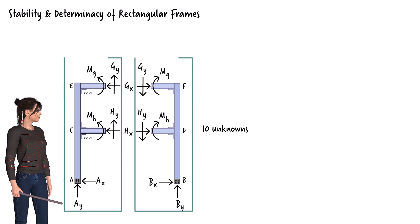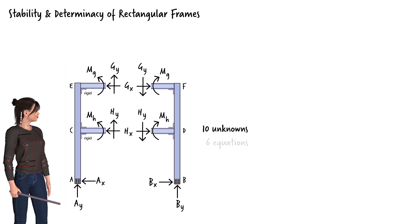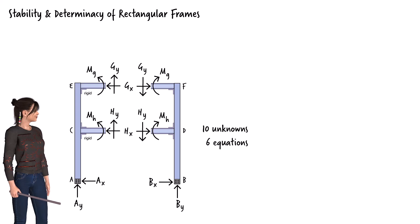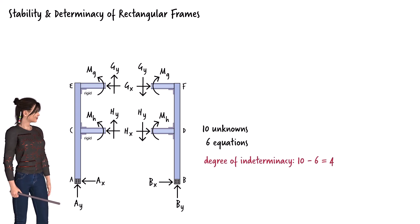For each half of the frame, we can write three static equilibrium equations, resulting in a total of six equations. Since the number of unknowns, 10, is greater than the number of equations, 6, the frame is statically indeterminate. Its degree of indeterminacy is 10 minus 6, or 4.